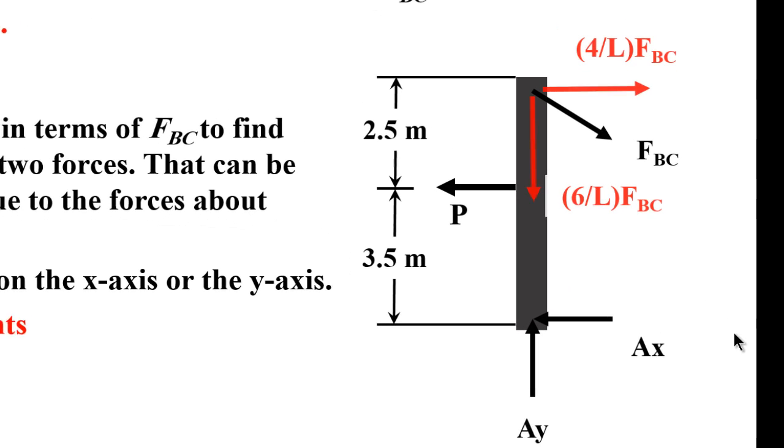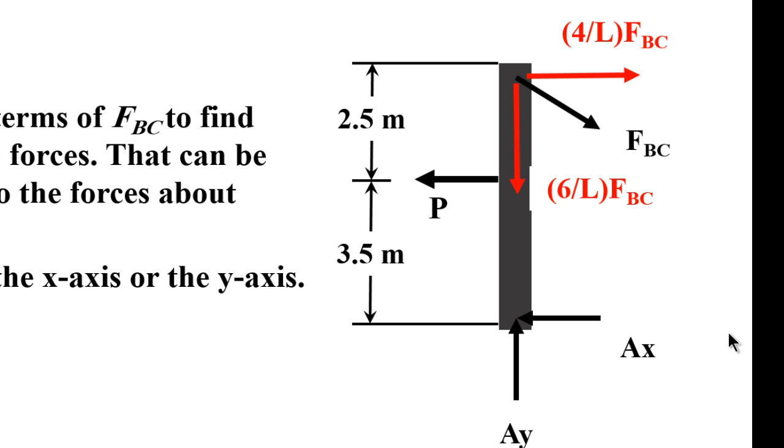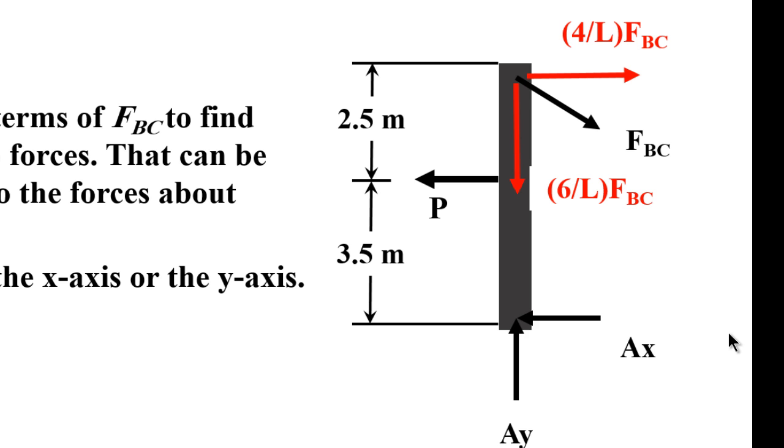Well, I'm basically saying that we need to resolve FBC to its components. Two components, two perpendicular components. The first component, the horizontal component, is 4 over L, L being the length of the cable, times FBC. And the vertical component is 6 over L times the force FBC. And guys, if somebody is still a little bit vague about this concept, you can check out some of the videos I've done before about going back to basics in terms of resolving forces.